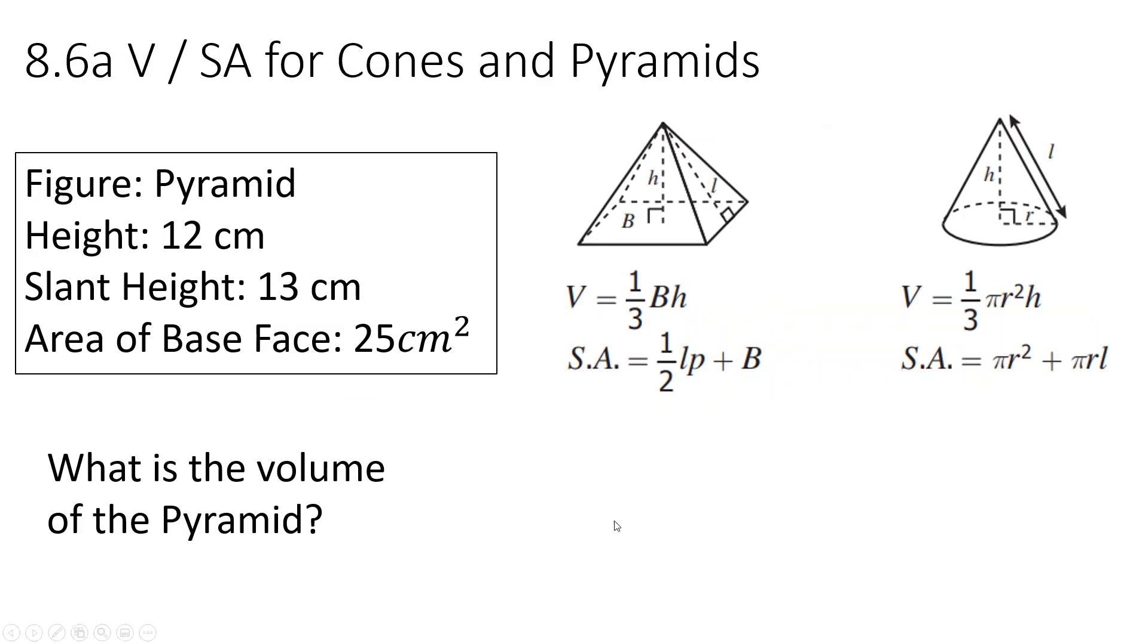Volume of the pyramid. So they're giving us a pyramid. Height of 12, slant height of 13. Area of the base face is 25. So big B stands for the area of the base face. So to figure out the volume, you're going to use this formula. You're going to plug in the numbers. You could use Desmos. Now they gave us a slant height. We didn't need the slant height for volume. Slant height becomes important when you're figuring out surface area. Plug it in. You can let Desmos do the work. It works out to 100 cubic centimeters. Moving on.